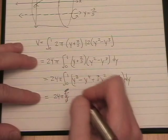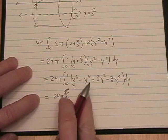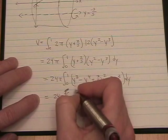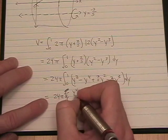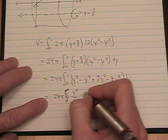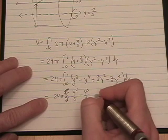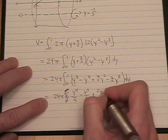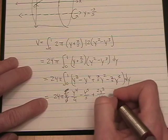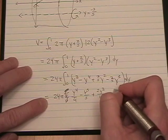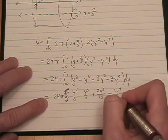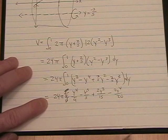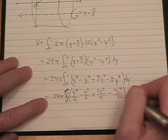I'm going to go ahead and do my power rule here with the anti-derivative. y to the 4th over 4 minus y to the 5th over 5 plus 2y cubed over 15 minus 2y to the 4th over 20. And we're doing that from 0 to 1.